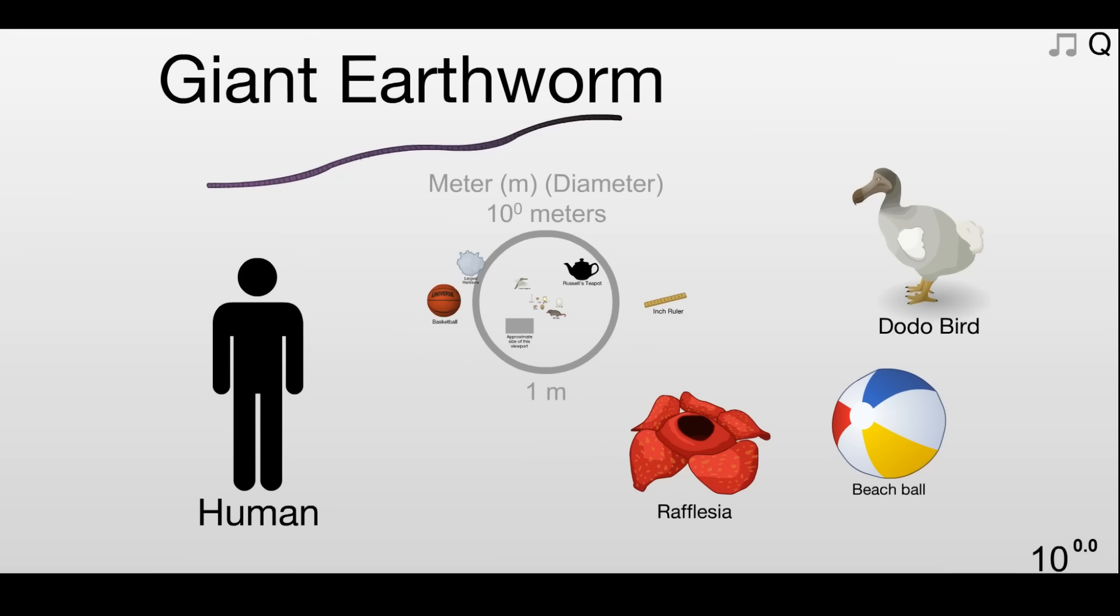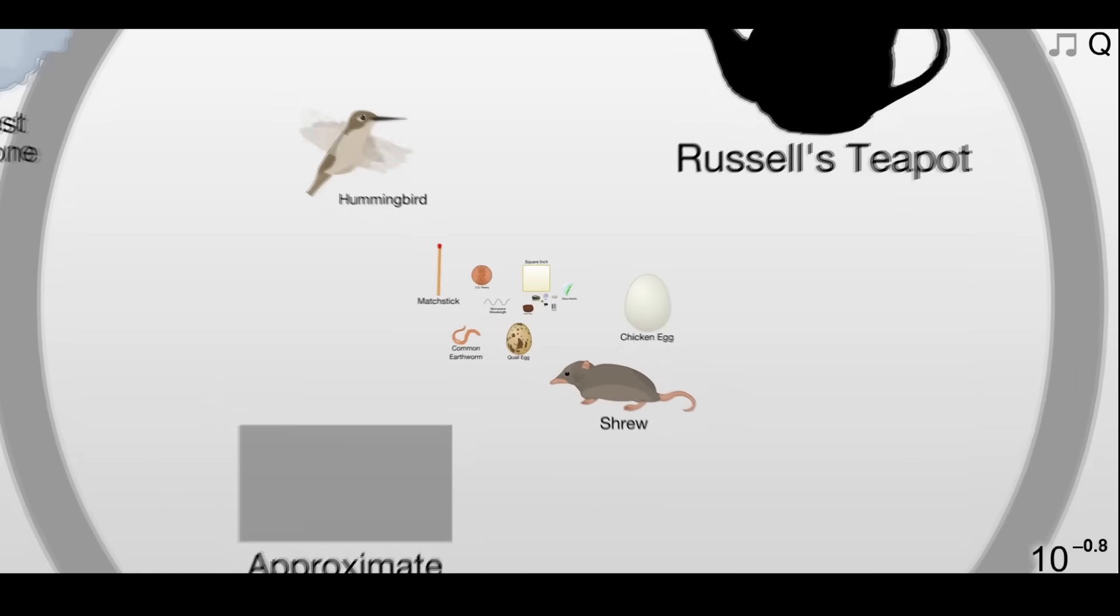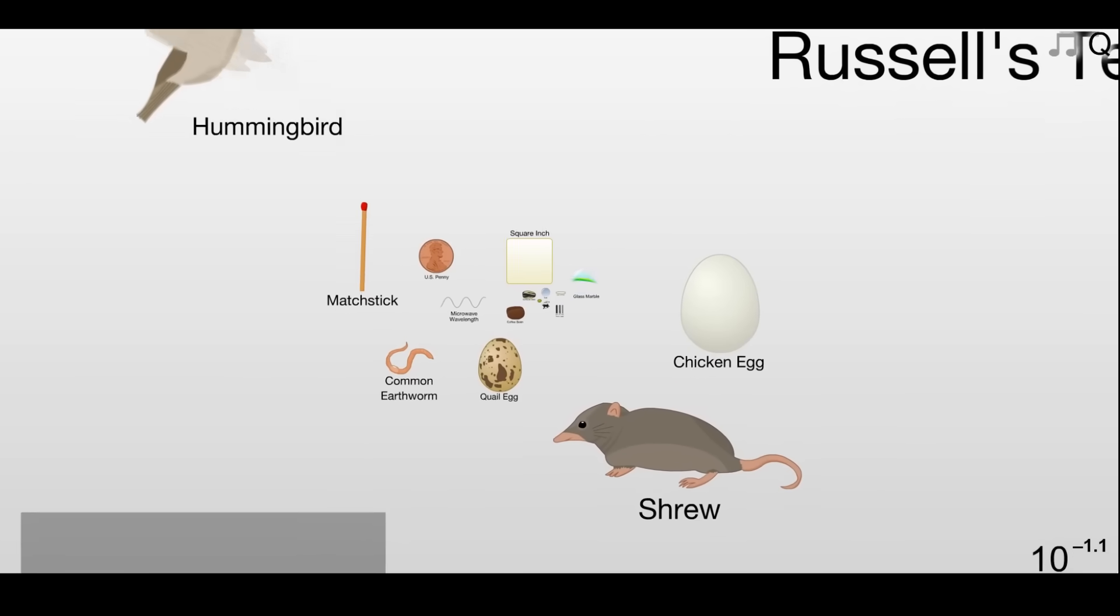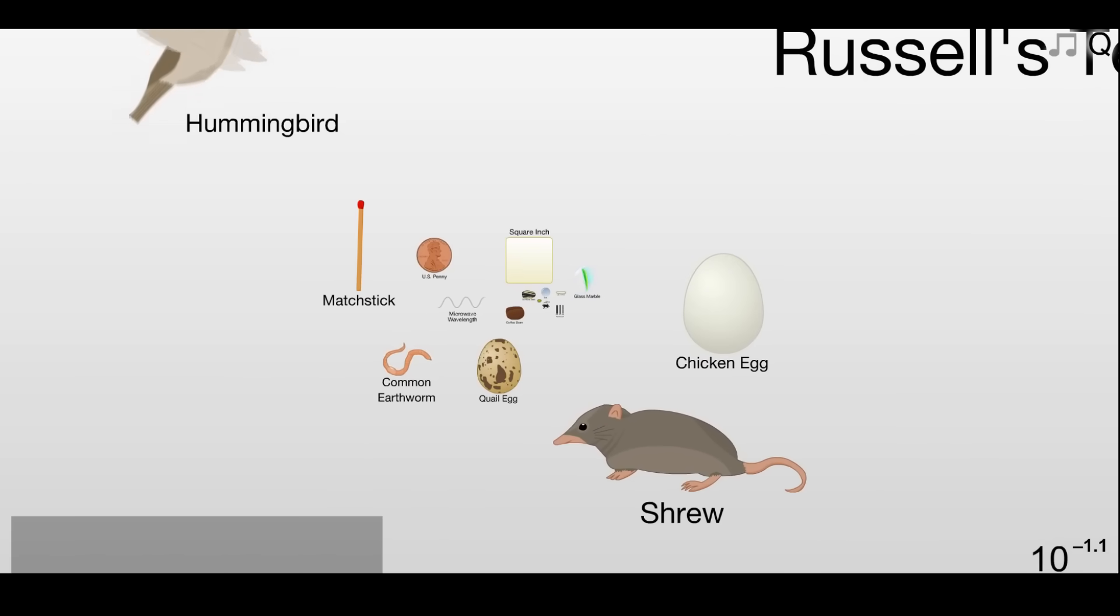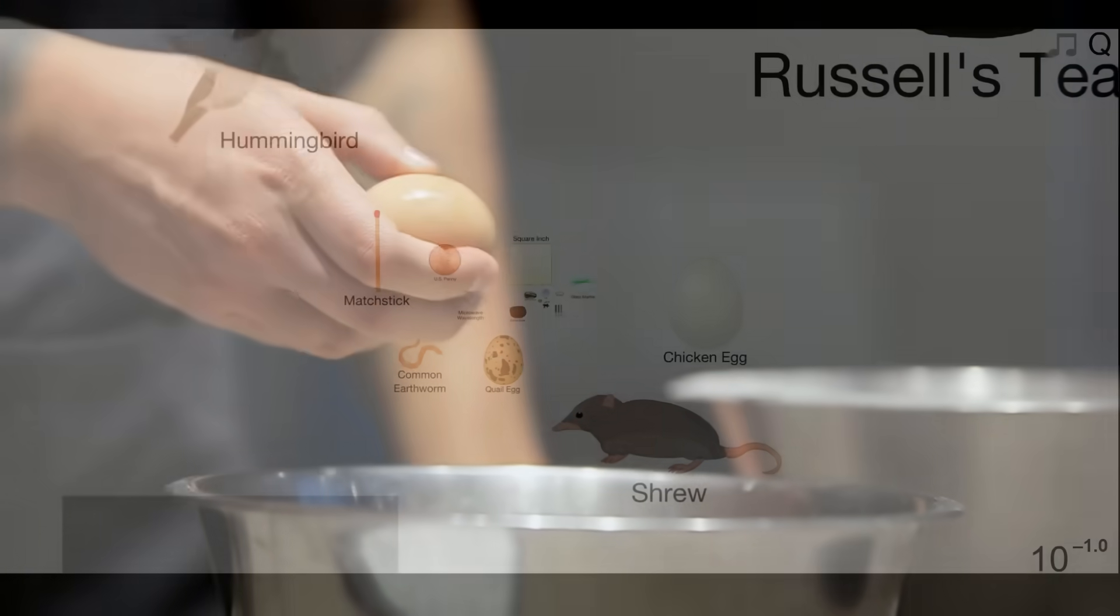Now let's go smaller, by one order of magnitude. So now we're looking at things that are on the scale of about 1 tenth of a meter, or 10 centimeters. These are things like the shrew, which are some of the smallest mammals found on earth, or a chicken egg that you might have had for breakfast this morning.